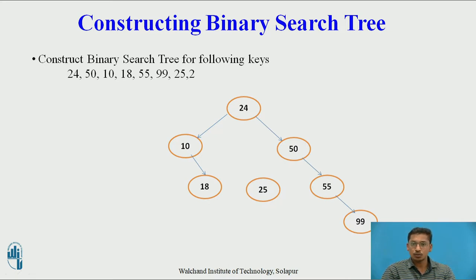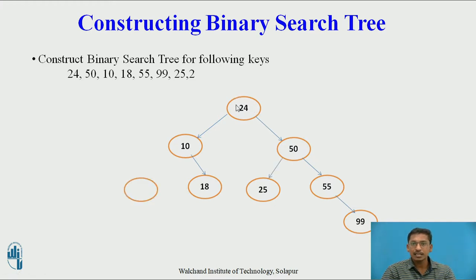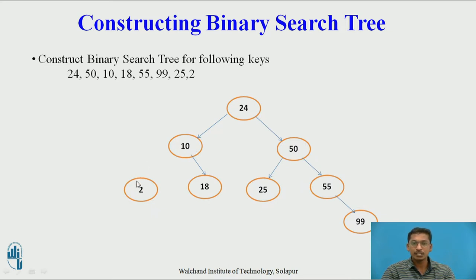Next node is 2. Starting with root 24: 2 is less than 24, so 2 should be on the left hand side of 24. We compare 2 with 10 — 2 is less than 10, so 2 is present on the left subtree of 10. This is the correct position of 2. This is the binary search tree we have constructed from the given keys.